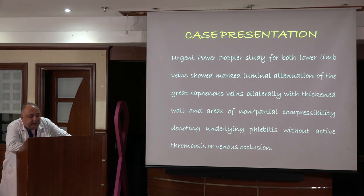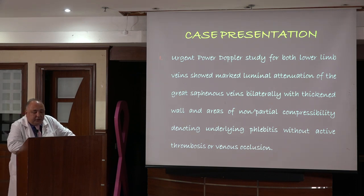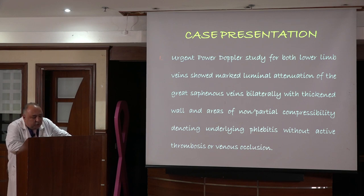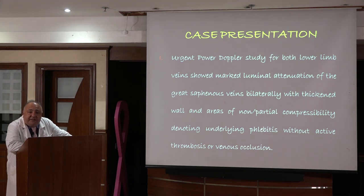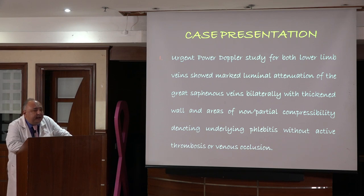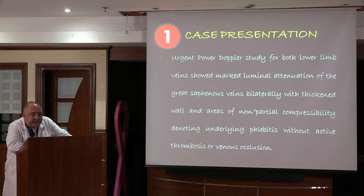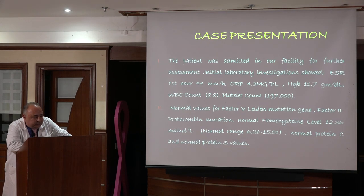Urgent Doppler study of both lower limbs showed marked luminal attenuation of the great saphenous veins bilaterally, with thickened wall and areas of non-partial compressibility, denoting underlying phlebitis without active thrombosis or venous occlusion — and this is very important. We have no DVT but we do have venous wall inflammation, which can at some point progress to deep venous thrombosis. This is our number one finding in the diagnosis.